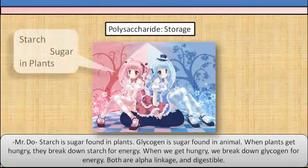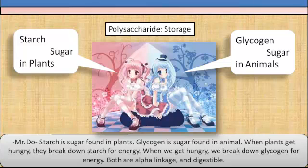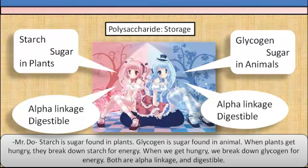Starch is sugar found in plants; glycogen is sugar found in animals. When plants get hungry, they break down starch for energy. When we get hungry, we break down glycogen for energy. Both are alpha-linked and they are digestible.